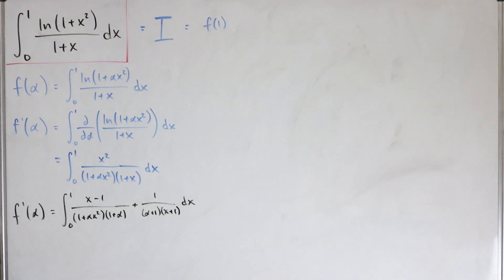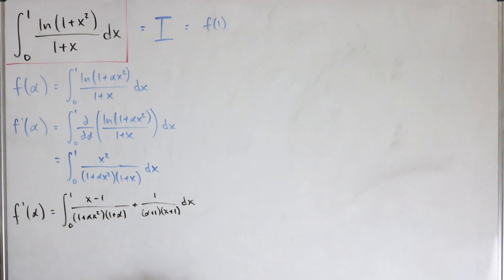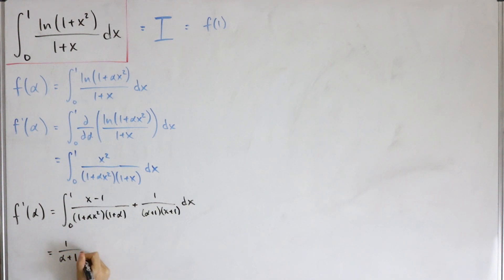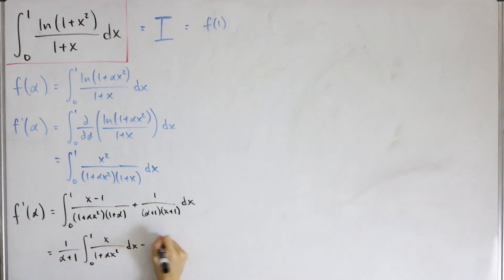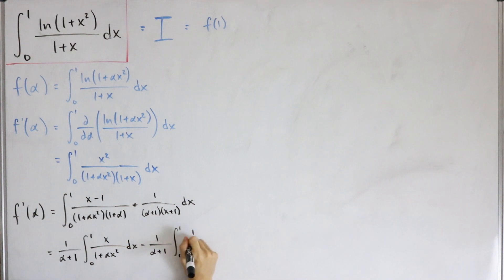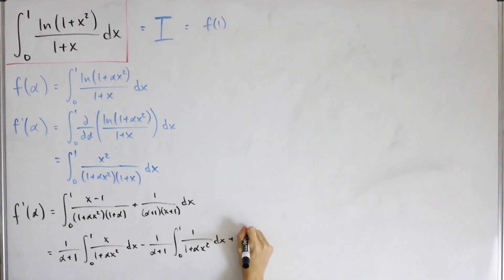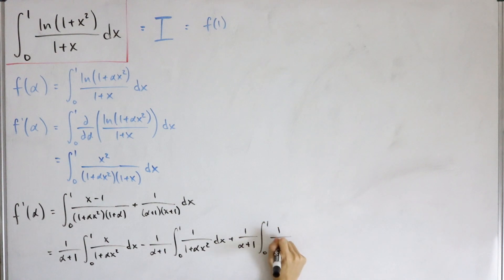We have an alpha plus one factor, and we factor out 1/(α + 1). Splitting by linearity, we get: 1/(α+1) times the integral of x/(1 + αx²) dx, minus (1 − 1/(α+1)) times the integral of 1/(1 + αx²) dx, plus 1/(α+1) times the integral from zero to one of 1/(x + 1) dx.